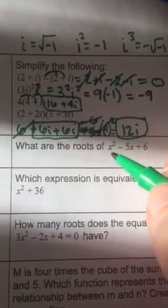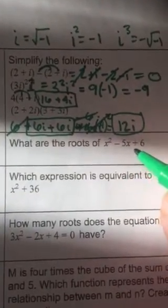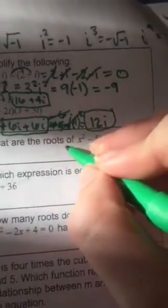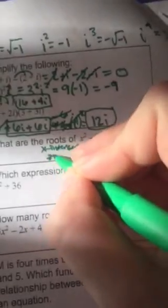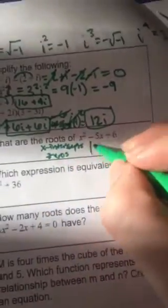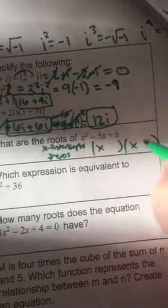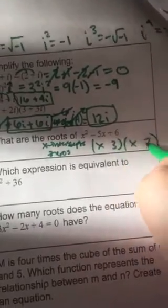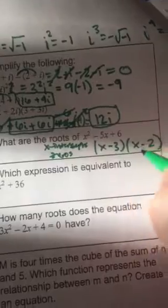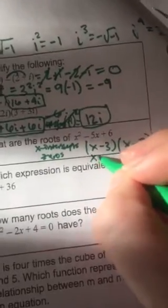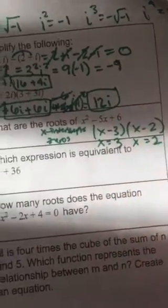What are the roots of x squared minus 5x plus 6? I'm going to factor it because the roots are the intercepts or zeros. x times x, multiples of 6 are 3 and 2, and they both need to be negative to get the negative 5. The solutions would be 3 and 2.